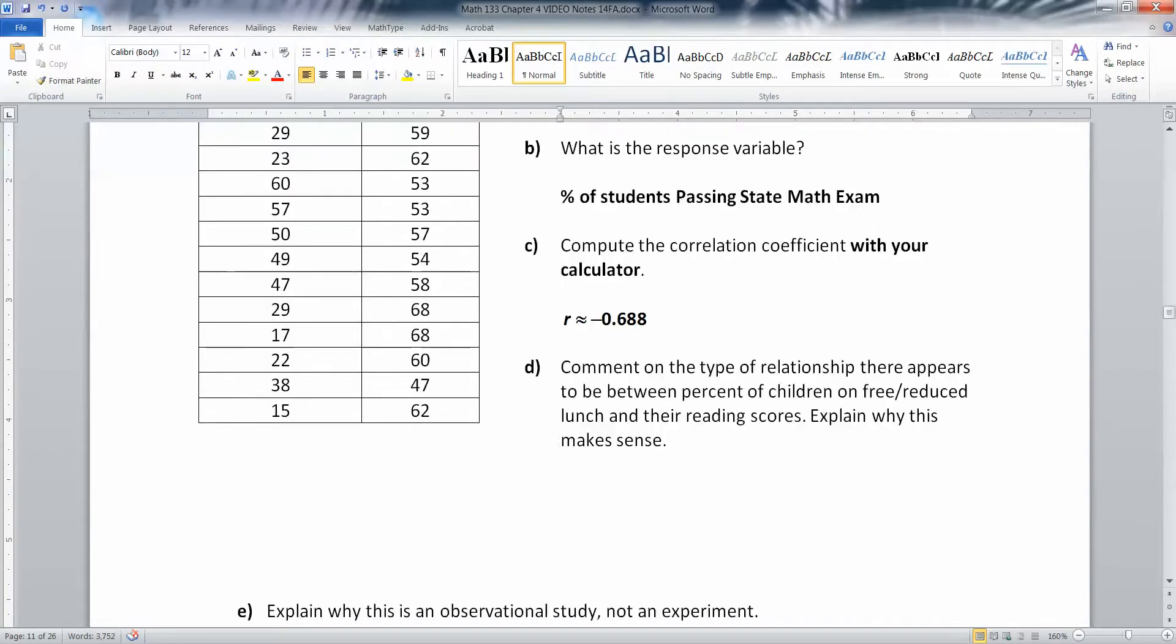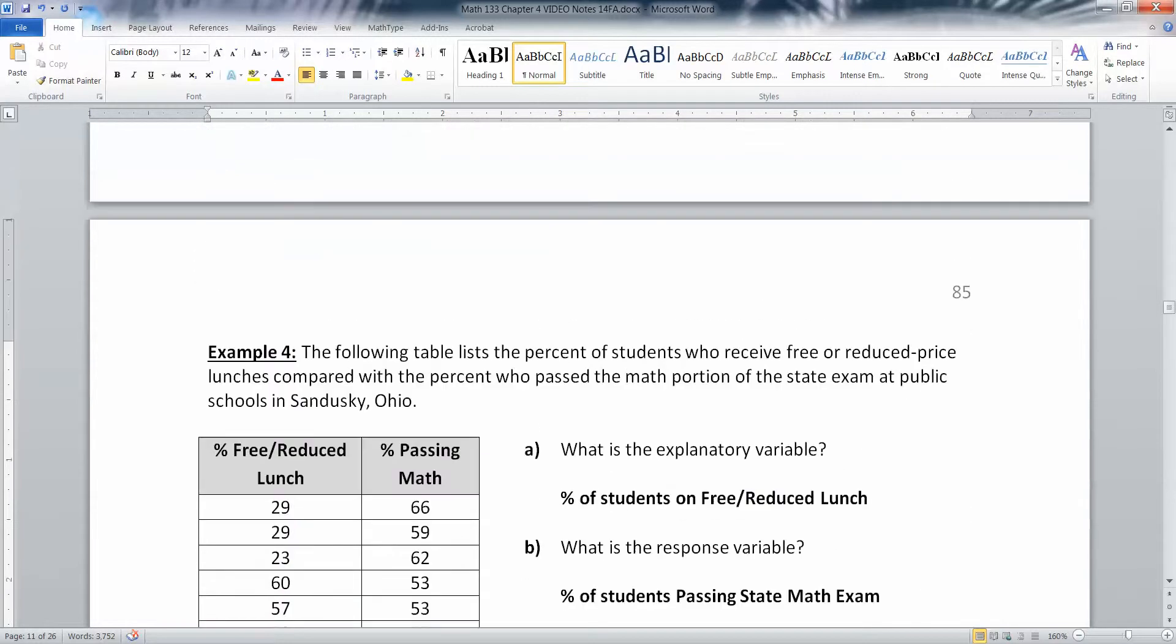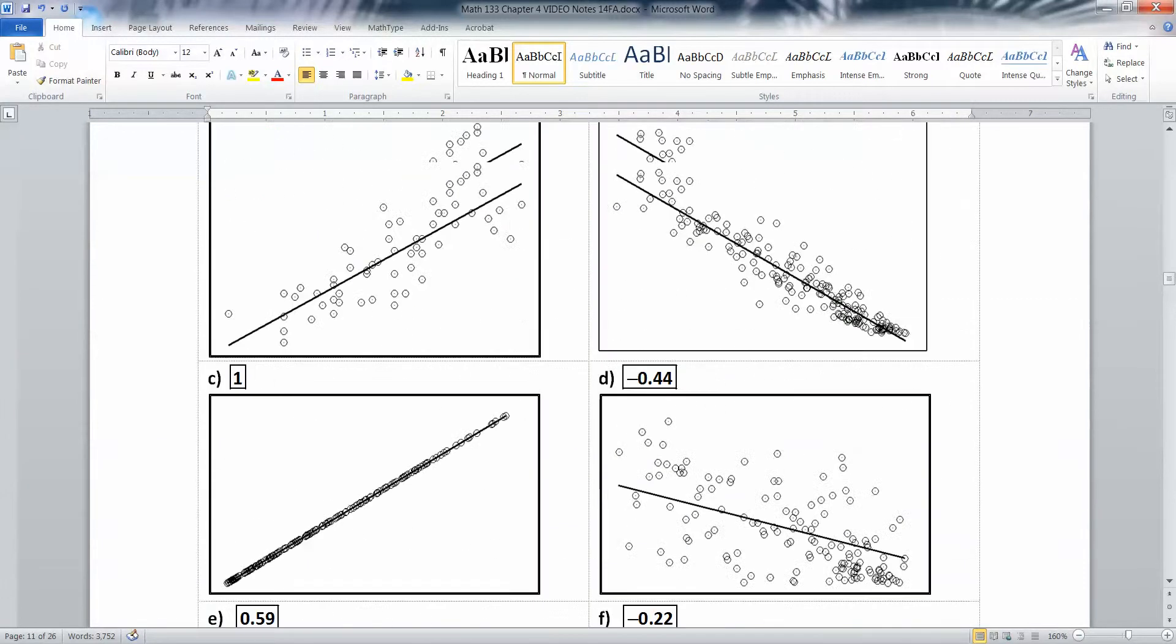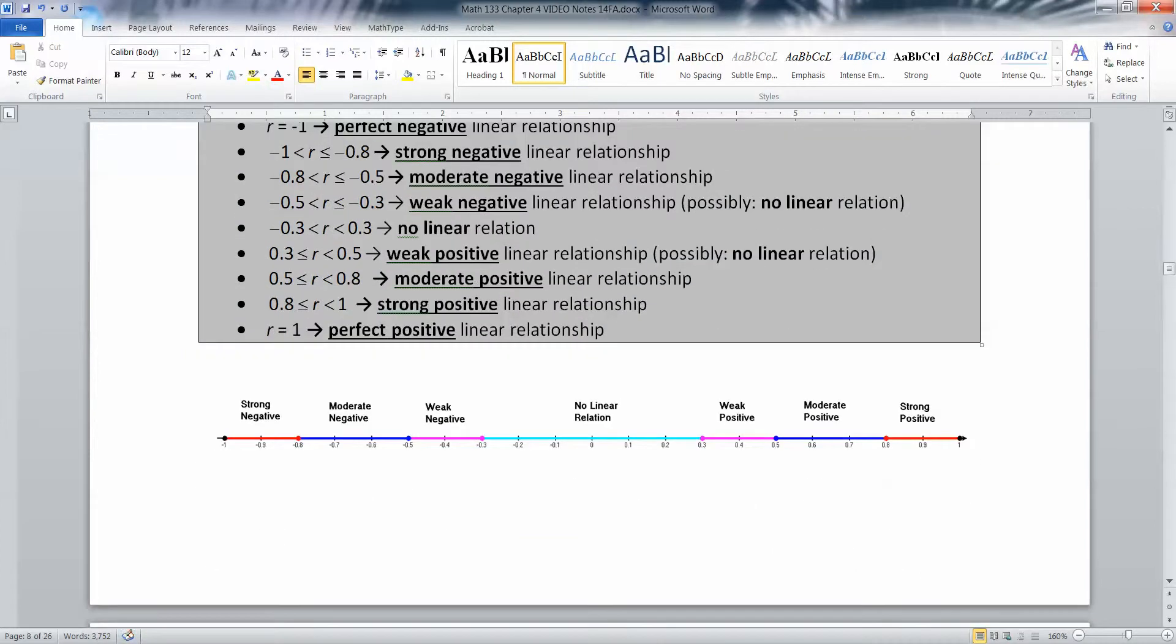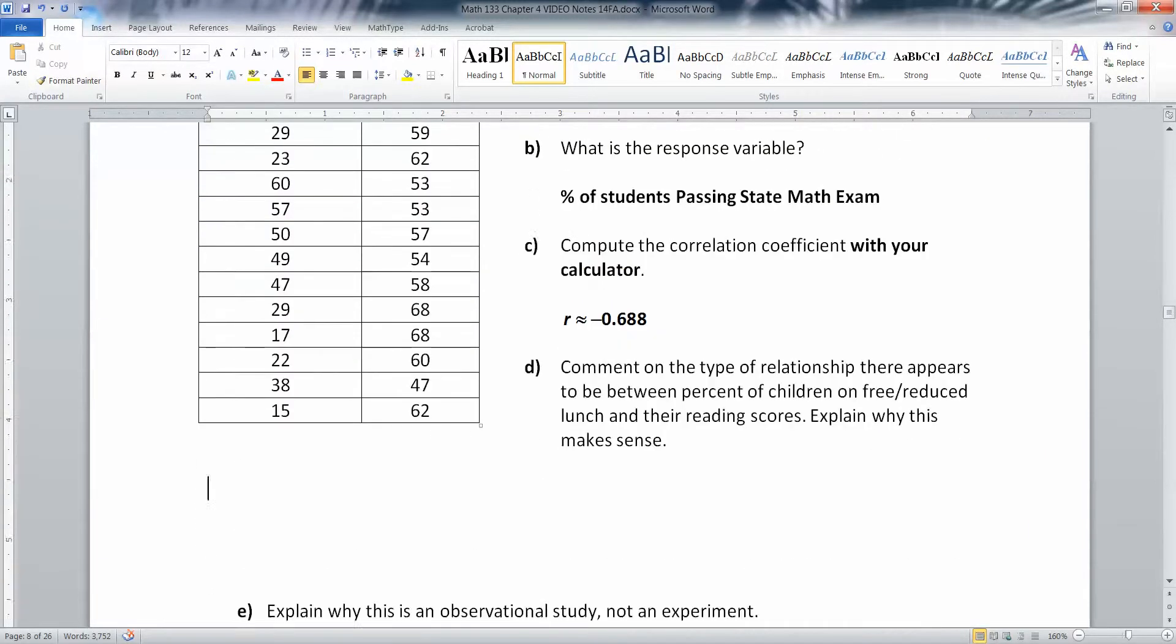What type of relationship seems to be happening? Well, that's negative, and is it moderate or weak? Let's go back and look. Negative 0.688 - that's right in this blue zone right here, kind of close to negative 0.7, so that's a moderate negative relationship.